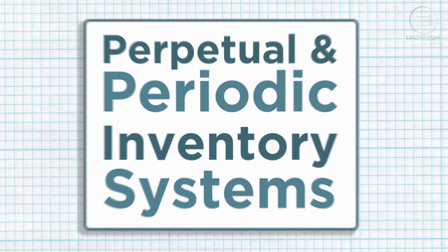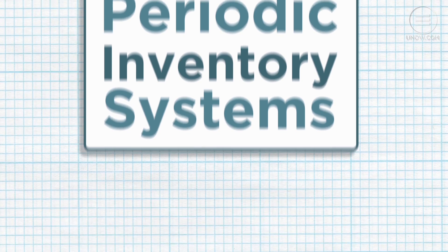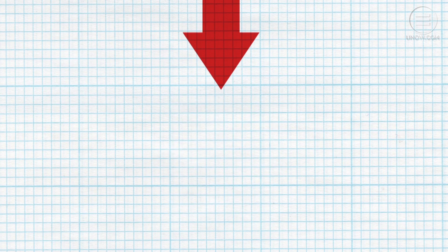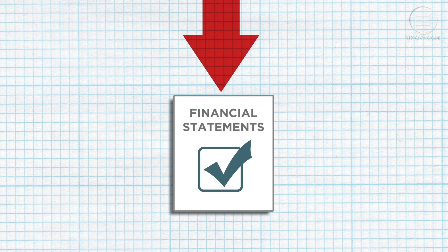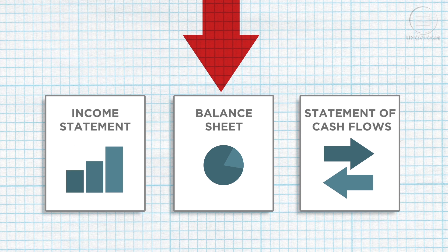Great work! You now know the concepts of inventory reporting systems and their advantages and disadvantages. In accounting, perpetual and periodic inventory systems will impact the creation of accurate financial reports and the costs associated with maintaining inventories.